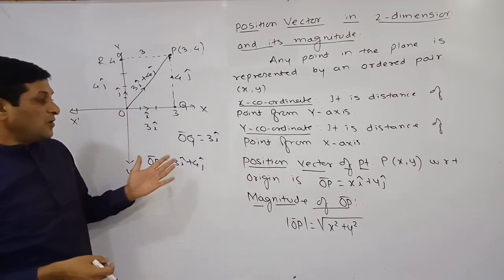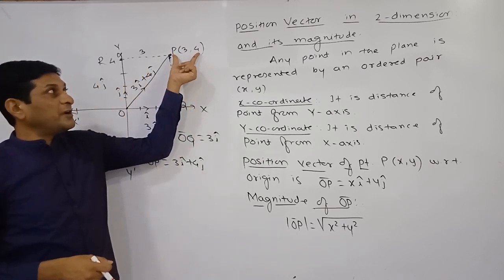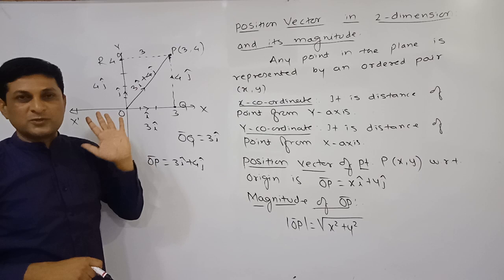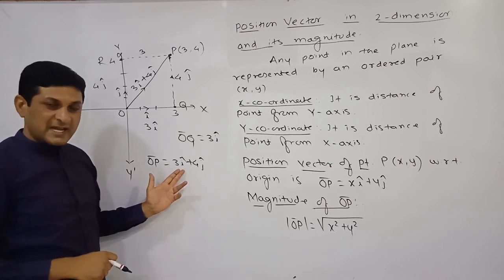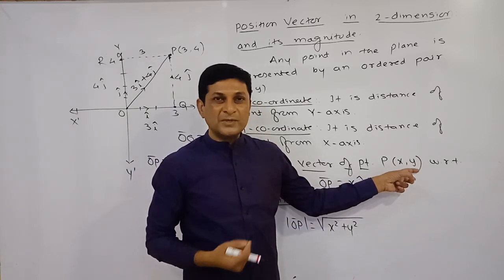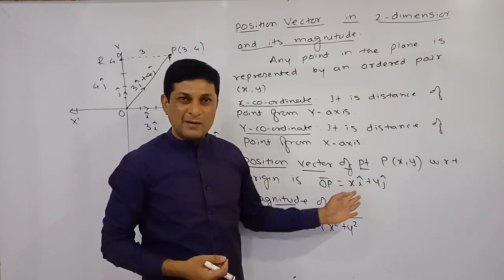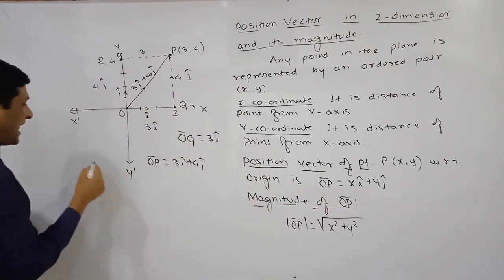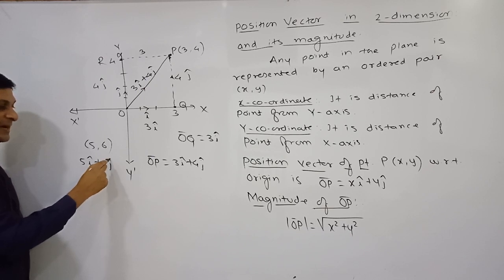Applying the triangle law, if the coordinates of a point are known, we can easily define its position vector with respect to the origin. If the coordinates are (3, 4), the position vector is 3i-cap + 4j-cap. In general, if the coordinates are (x, y), the position vector is xi-cap + yj-cap. For example, if the coordinates are (5, 6), the position vector is 5i-cap + 6j-cap.